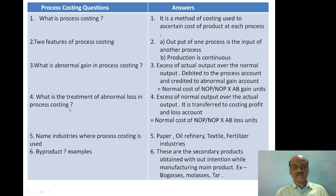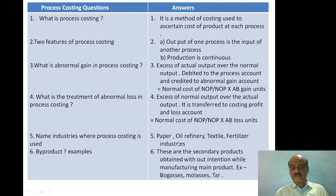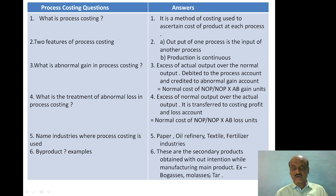Treatment of abnormal loss in process costing: excess of normal output over actual output is called abnormal loss. It is transferred to the costing profit and loss account. Formula: Normal cost of normal output ÷ Normal output × Abnormal loss units. Industries where process costing is used: paper industry, oil refinery, textile, and fertilizers industry. Byproducts are secondary products obtained without intention while manufacturing the main product. Examples: bagasse, molasses, and tar.